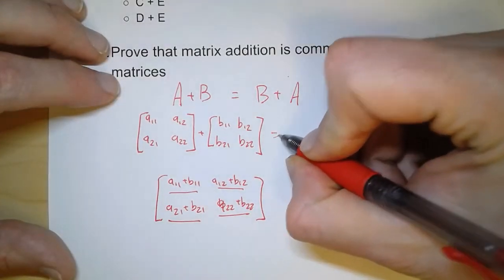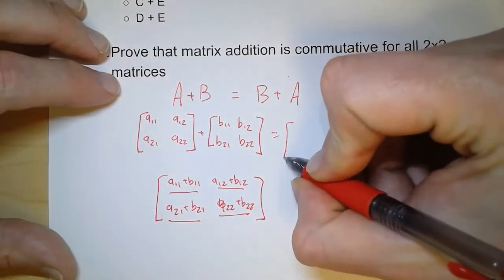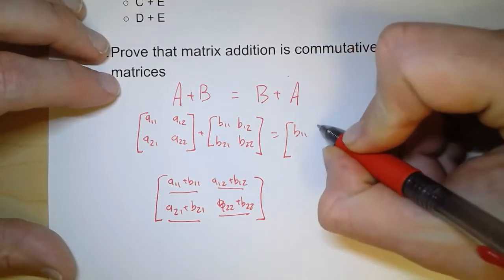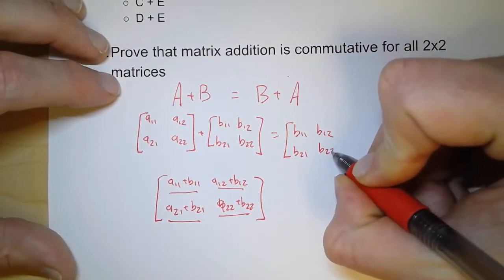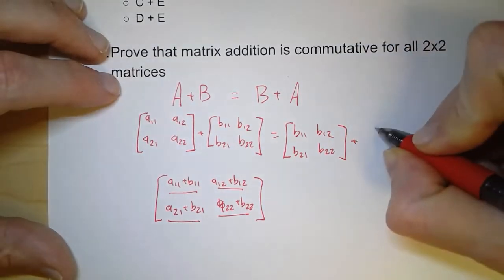Now on the other side, we have matrix B written first. So B11, B12, B21, B22. And then we add matrix A. A11, A12, A21, A22.